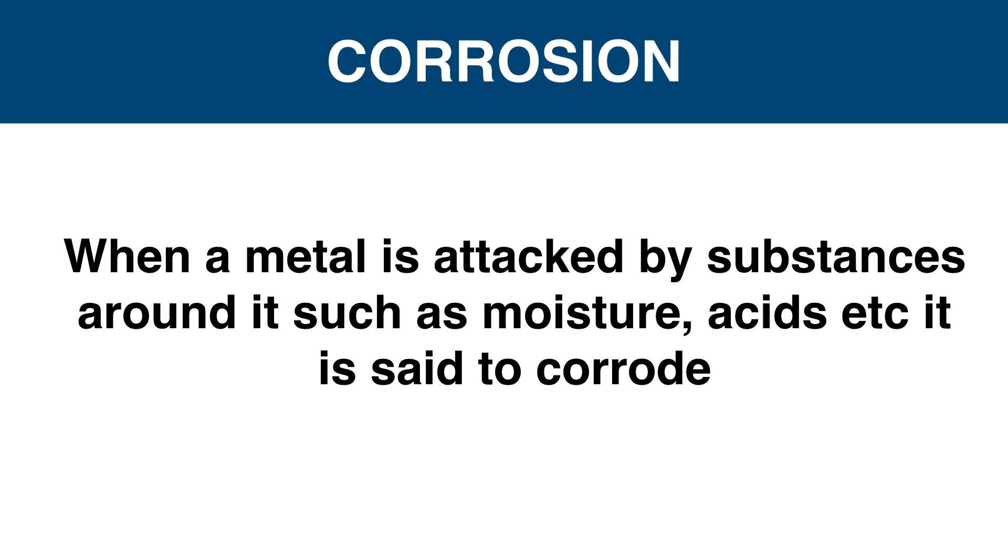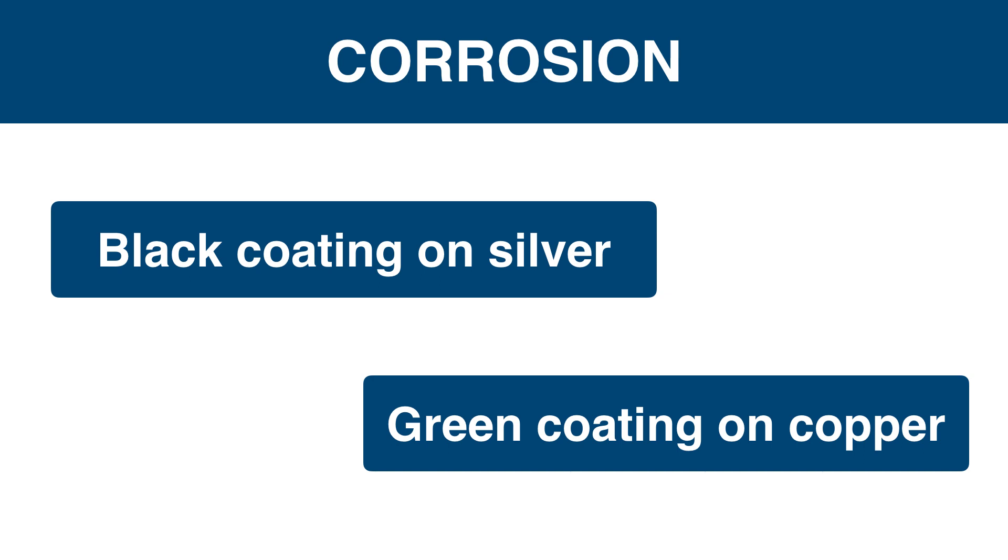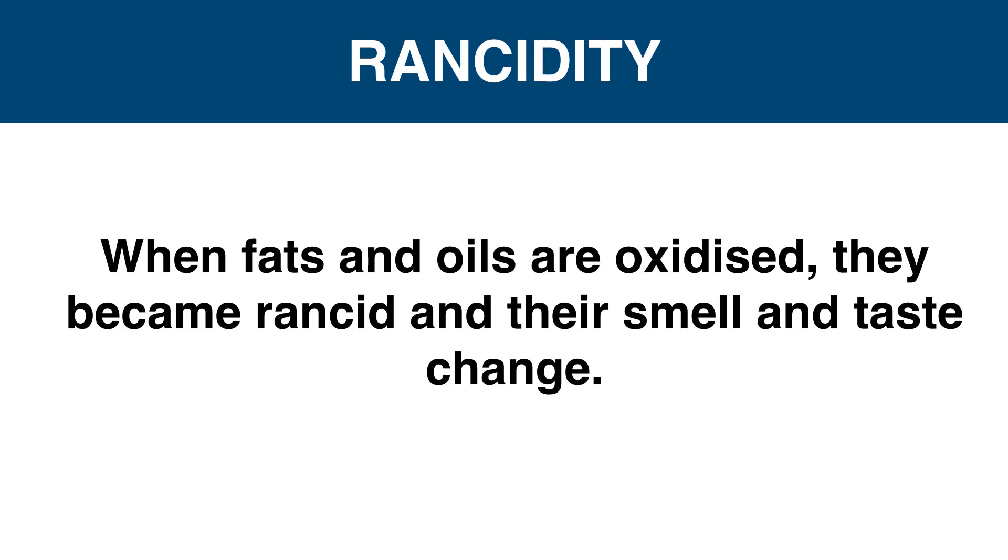Black coating on silver and green coating on copper are some examples of corrosion. Rancidity: rancid means stale smell. When fats and oils in food are oxidized, they become rancid. Keeping food in airtight containers and adding antioxidants in food help to slow down oxidation.